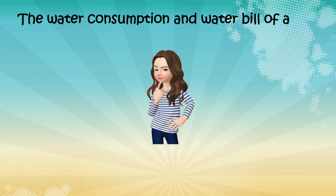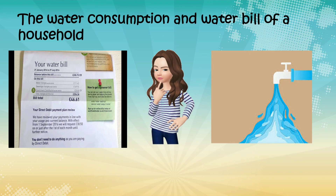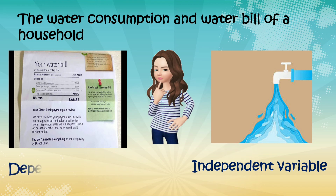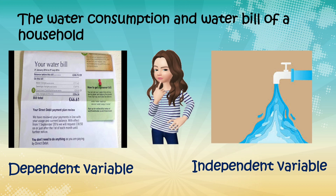And lastly, the water consumption and water bill of a household. So ang ating independent dyan yung water consumption, at ang ating dependent ay water bill of a household. Yun lang po ang pinagkaiba ng independent variable sa dependent variable. So we say, independent variable can stand alone, and the dependent variable cannot stand alone — nakadepende po ito sa independent variable. Sana may natutunan kayo sa araw na ito.